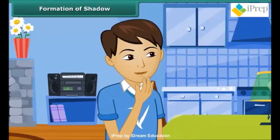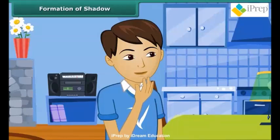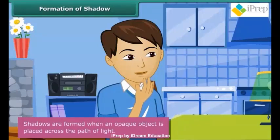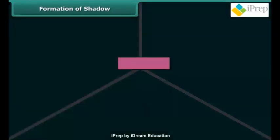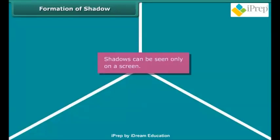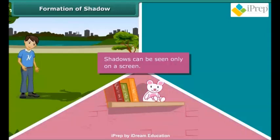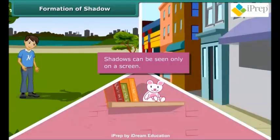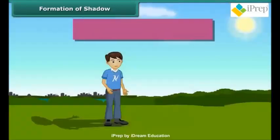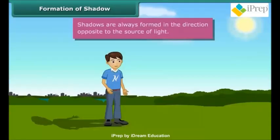You are confused and want to understand when shadows are formed. Shadows are formed when an opaque object is placed across the path of light. Shadows can be seen only on a screen — the ground, walls of a room, buildings, and other such surfaces act as screens. Shadows are always formed in the direction opposite to the source of light.